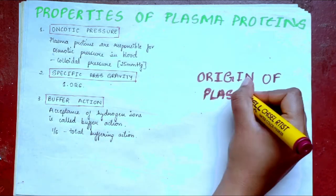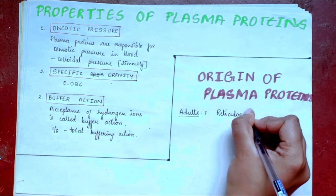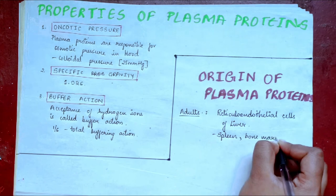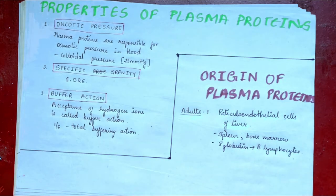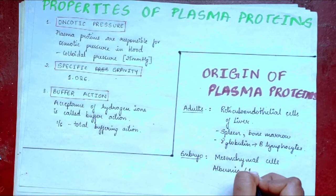Now, we come to the origin of plasma proteins. In adults, it is synthesized in reticuloendothelial cells of liver, in spleen, bone marrow, gamma globulins from B lymphocytes. In embryo, these are synthesized from mesenchymal cells.